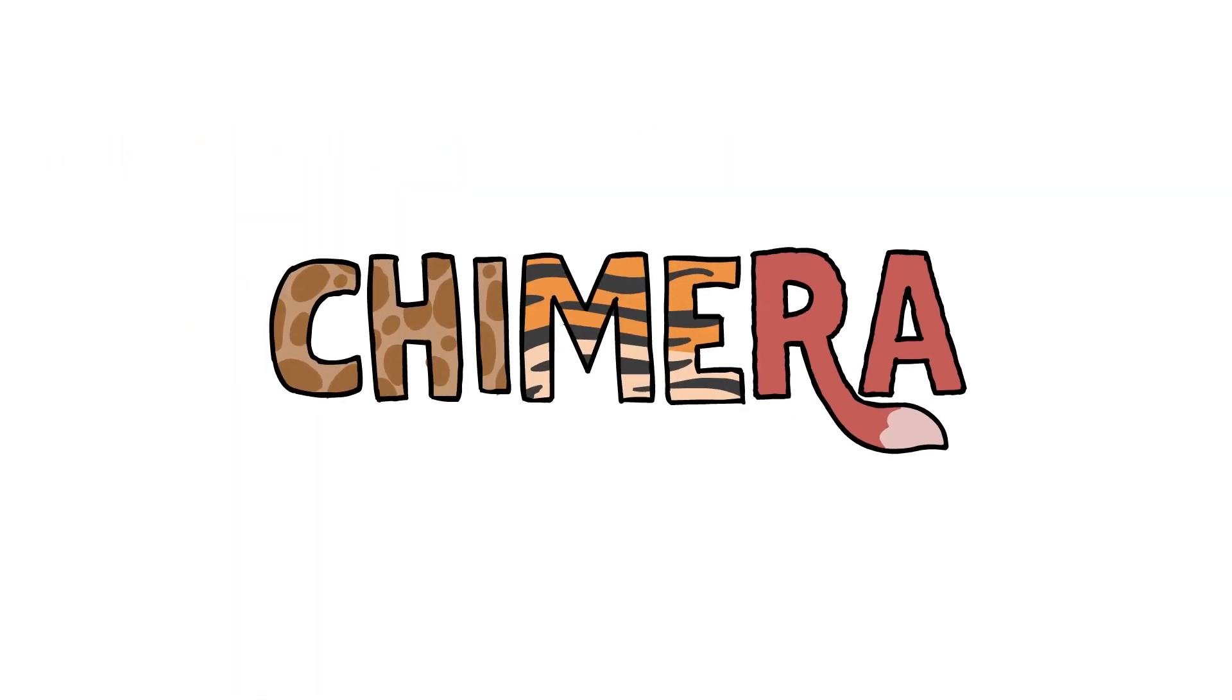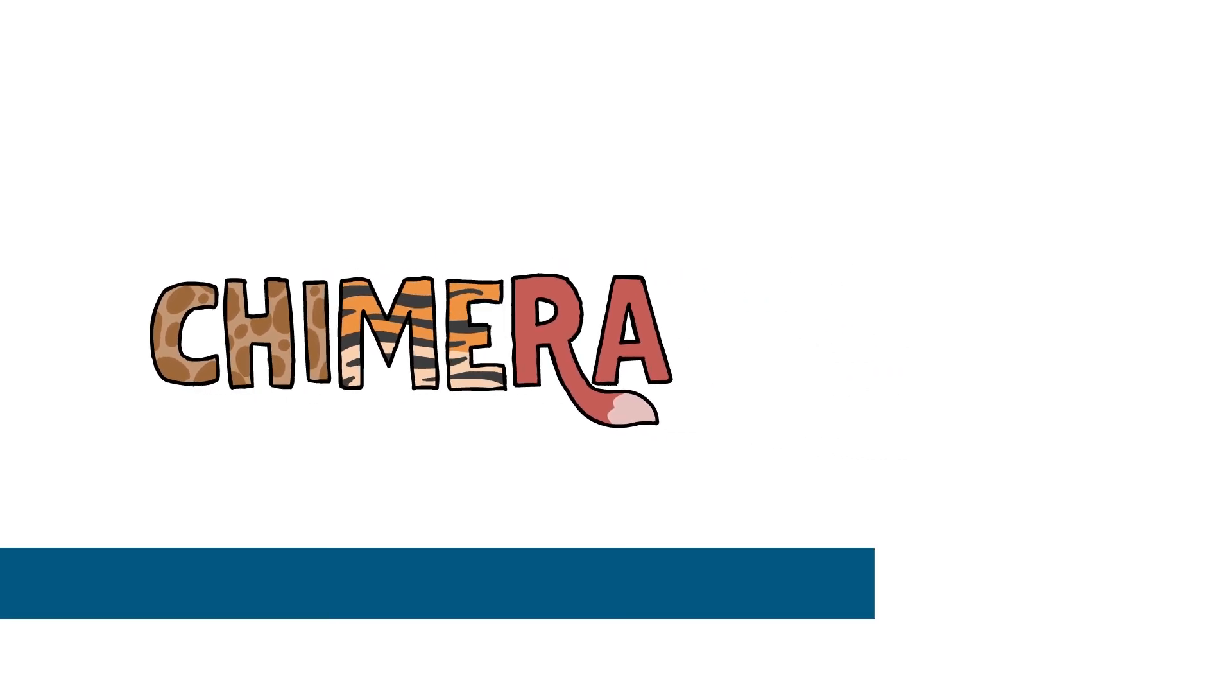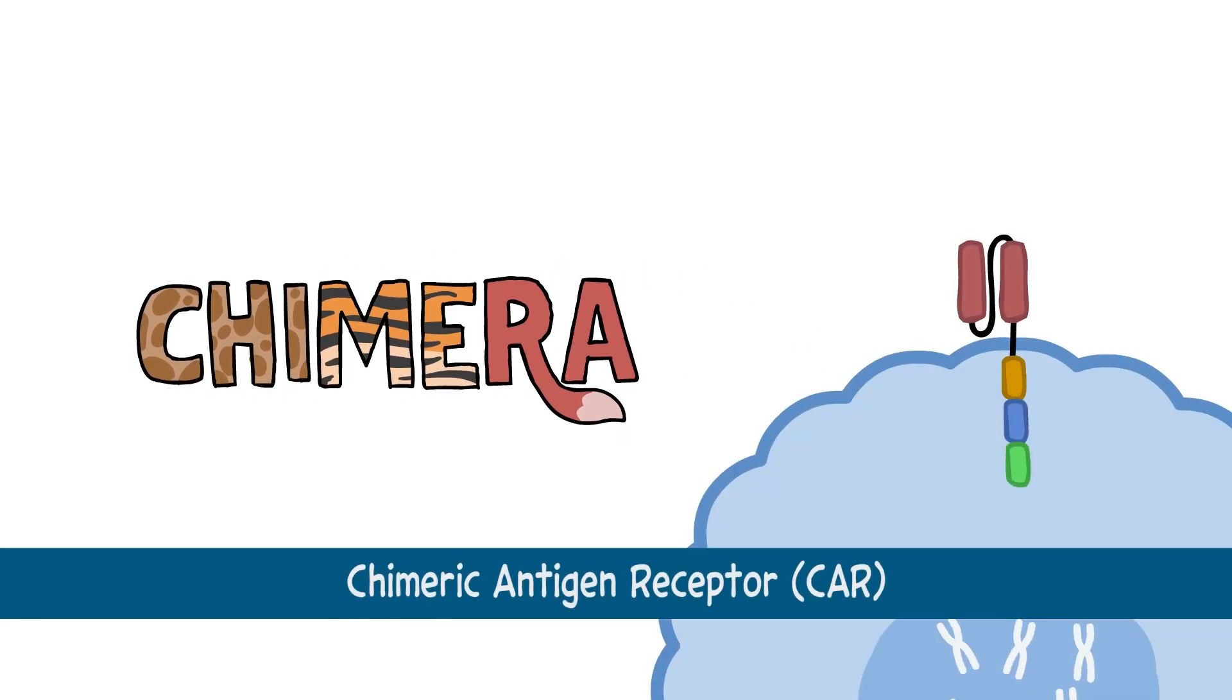A chimera is a mythical creature made up of parts from different animals. A chimeric antigen receptor is a special receptor made up of different segments that scientists generate in a laboratory.